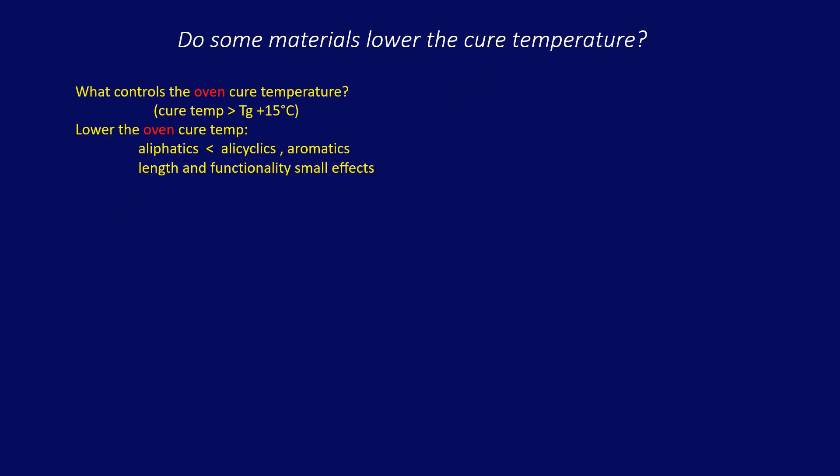To get a low oven cure temperature, there are some rules to follow. But you end up with low thermal stability. For a high glass transition temperature, you need a high cure temperature. Even higher than that transition temperature.